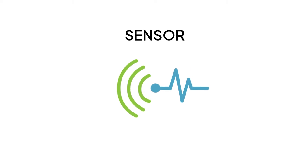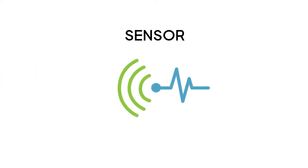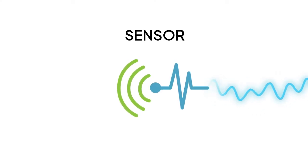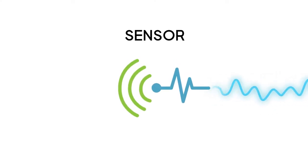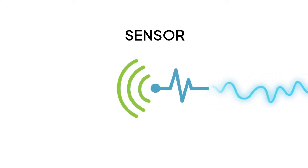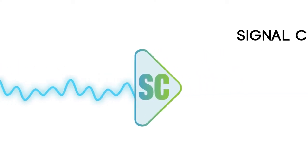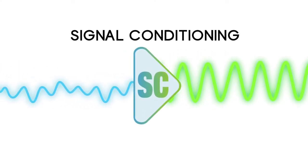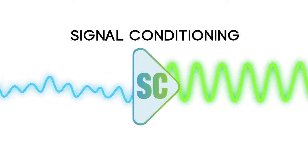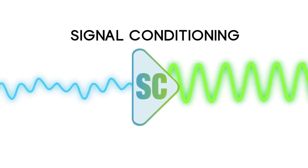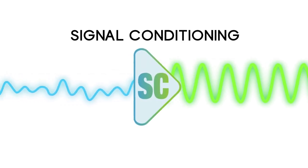First, a sensor measures a physical parameter such as temperature, humidity, pressure, or flow, and outputs a quantifiable electrical signal — depending on the type of sensor, either voltage, current, or resistance. Next comes signal conditioning. This is where the raw signal from the sensor is either amplified or attenuated depending on the line level requirements of the system.